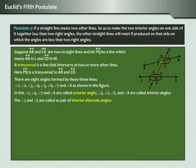Angle three and angle five are called a pair of interior alternate angles. Observe that angle two and angle eight is also a pair of interior alternate angles.